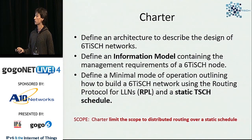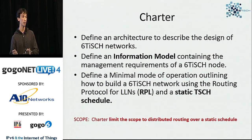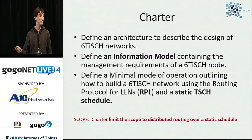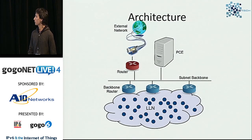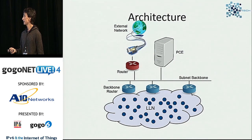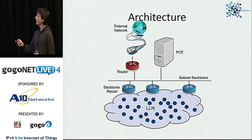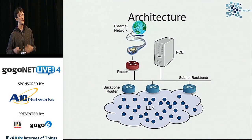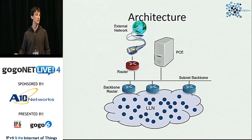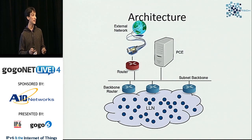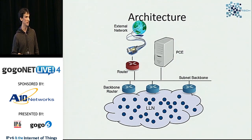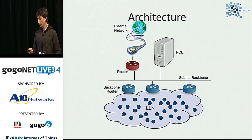The initial approach will be a static schedule — we are not yet addressing centralized or distributed scheduling algorithms, only defining a static schedule with best-effort routes using RPL on top. The architecture has a low-power lossy network with multiple backbone routers, each being the root of an RPL tree, connected to a backbone subnet. There can be a PCE (Path Computation Element) that computes the schedule and sends it to nodes. We are also looking at decentralized approaches where nodes decide schedules according to application bandwidth needs.